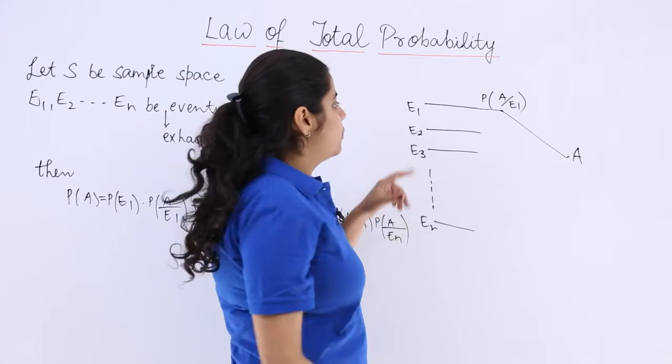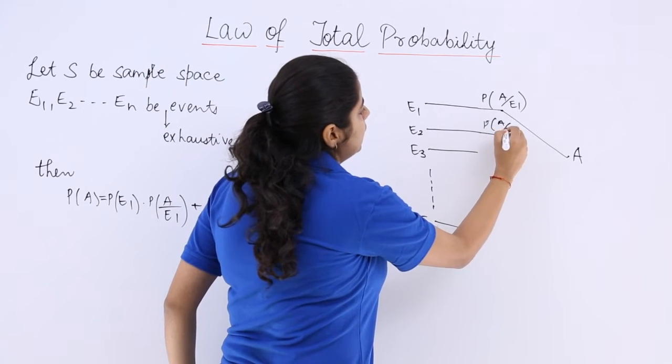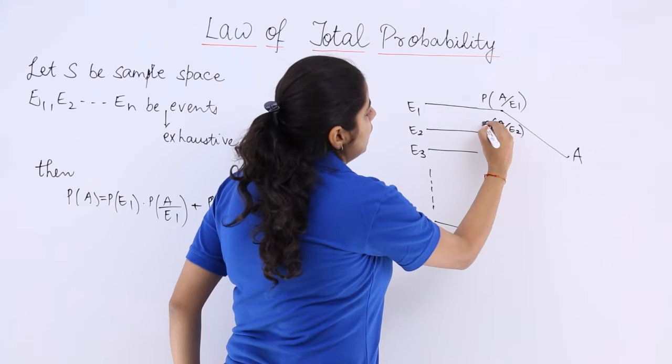Similarly probability of E2, here you will say probability of A when E2 has occurred.